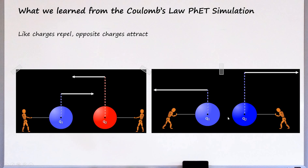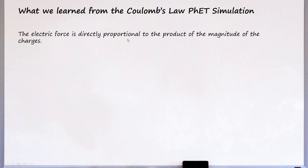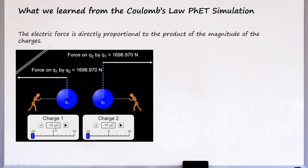We also learned that the electric force is directly proportional to the product of the magnitude of the charges. So in this picture you see that the first charge has a value of negative 10 microcoulombs, which means that micro means times 10 to the negative 6. You learned this back in grade 7. Some of you are my students. And the other charge also has a value of 10 microcoulombs.